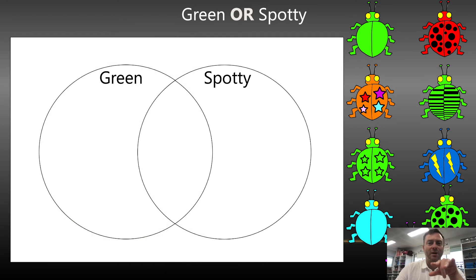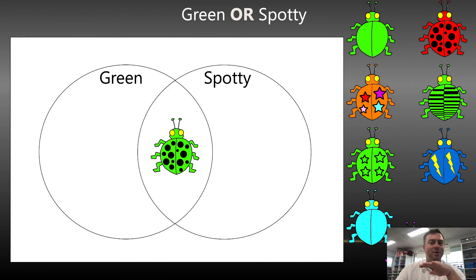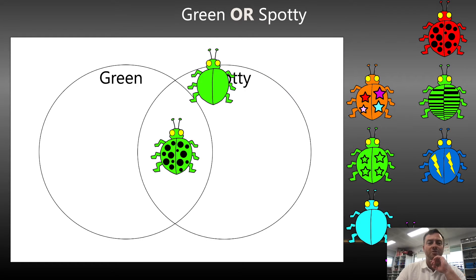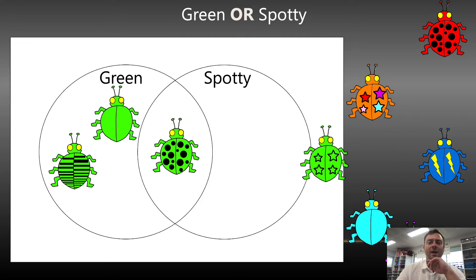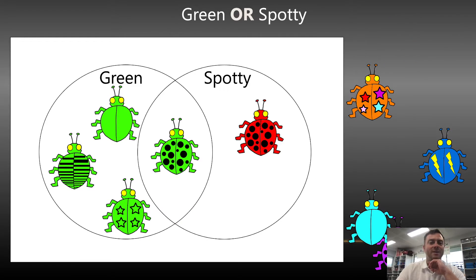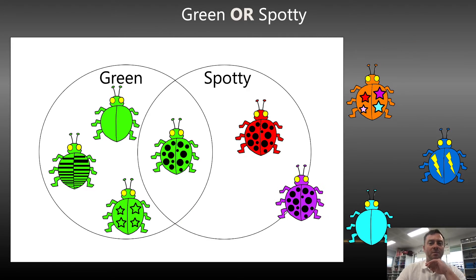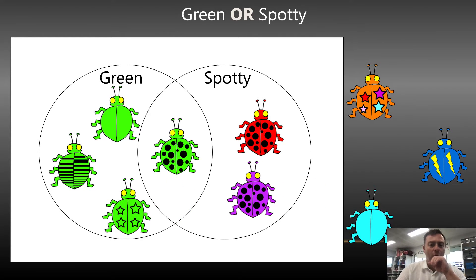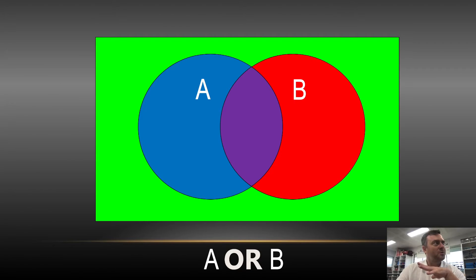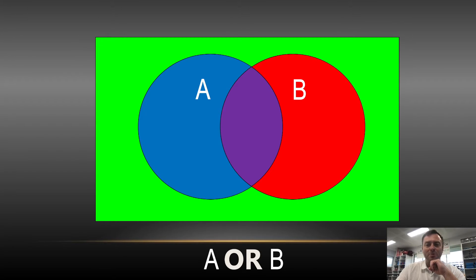So if I say something's green OR spotty — if it's green and spotty, that is green or spotty. If I say anything that's just green, that is green or spotty. And if I say anything that's just spotty, that also makes that condition. So OR widens your options. So pause the video and think about what colors would satisfy OR in this diagram. Hopefully you picked up there would have been blue, purple, or red — those were the colors that matched.